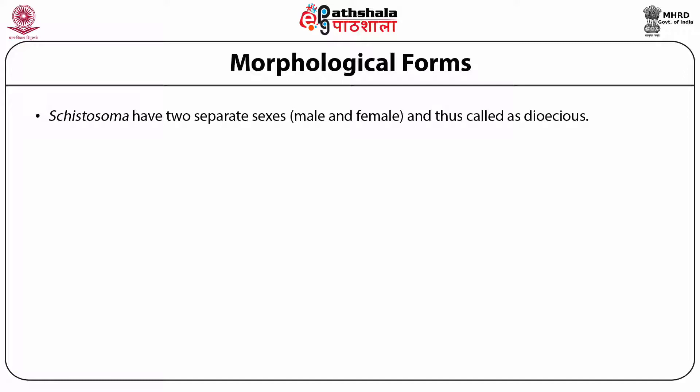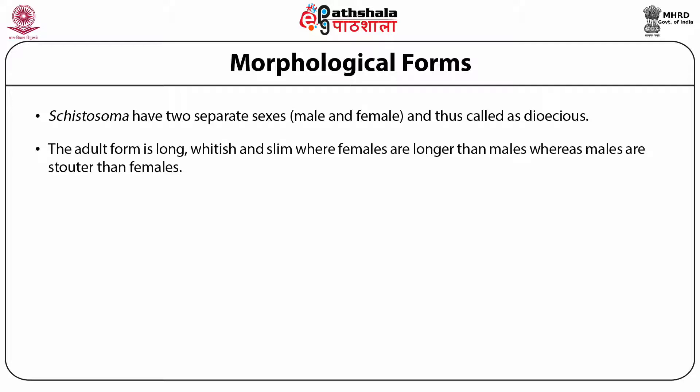Another form of parasite called cercaria is motile and swims from the intermediate host to the definitive human host. Adult forms of parasite remain with the host forming a mating pair — male and female together — where the male has the female residing within its groove called the gynecophoric canal. Cystosoma have two separate sexes, male and female, and thus are called dioecious. The adult form is long, whitish and slim; females are longer than males.